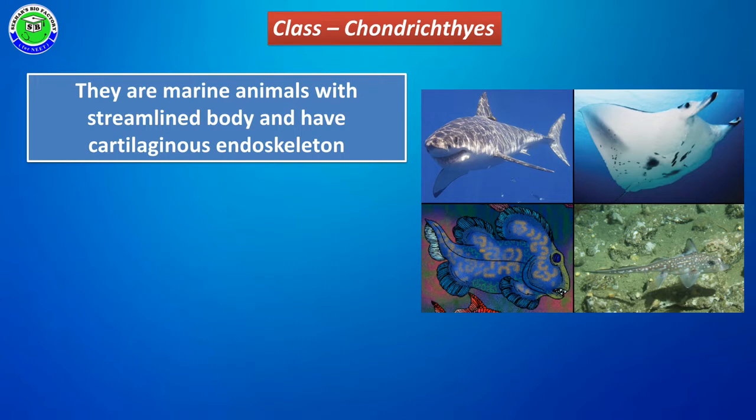All Chondrichthyes members have an endoskeleton. This endoskeleton is made up of a smooth bony tissue called cartilage. The presence of a cartilaginous endoskeleton is one of the fundamental characters of all Chondrichthyes members.